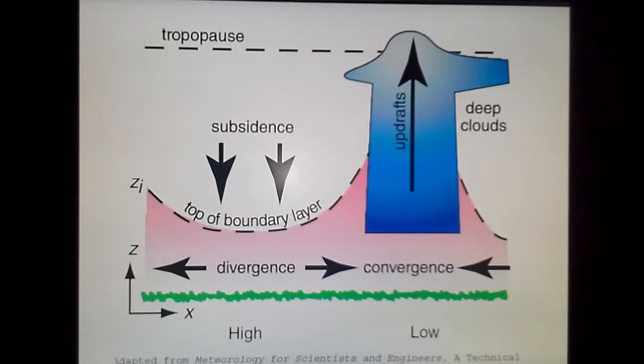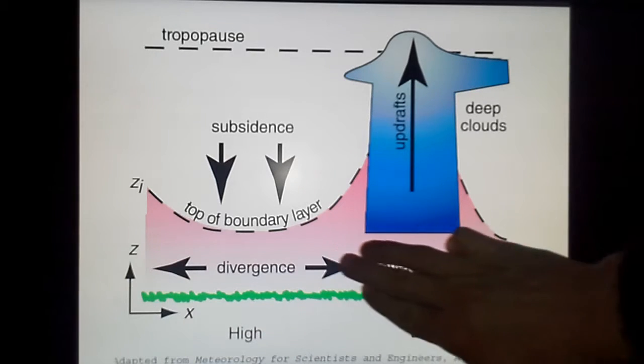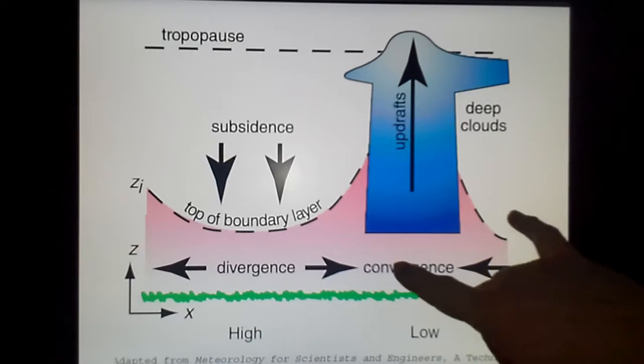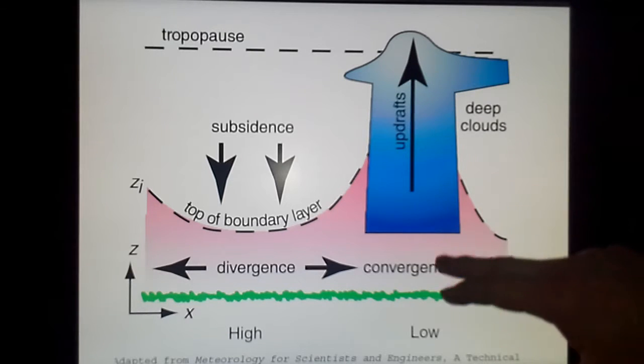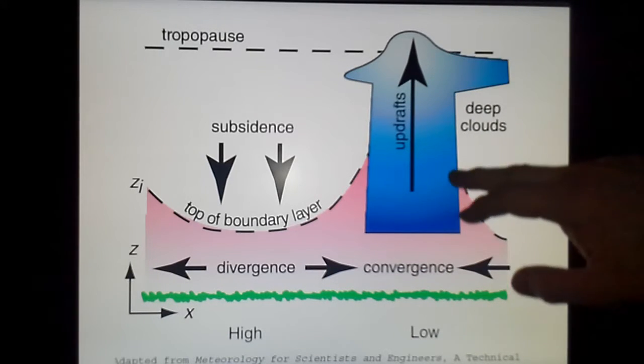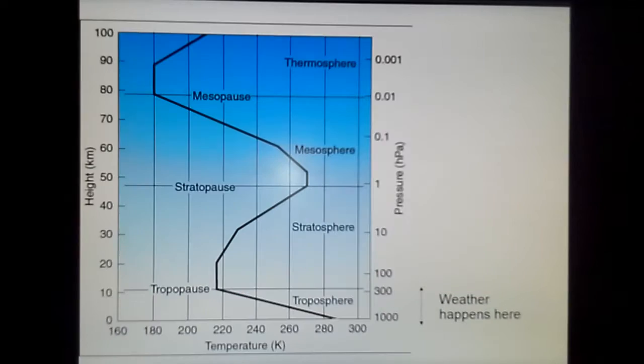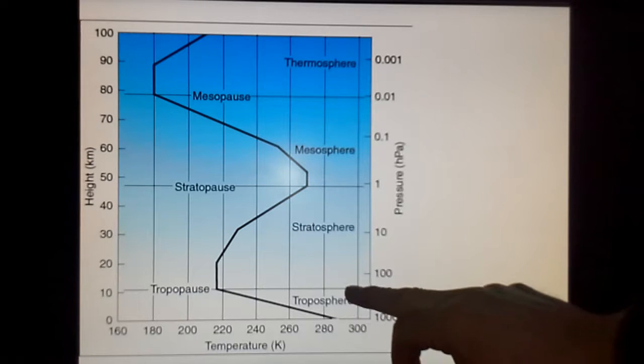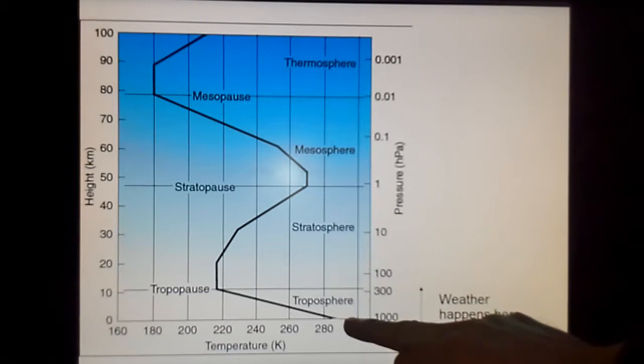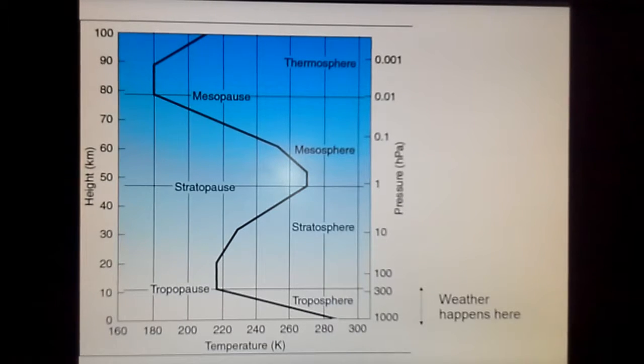Here we have another figure of the same thing. In the free atmosphere, we have very little effect of surface friction, and at the bottom we have the boundary layer. In case of strong convection, the boundary layer may reach all the way up to the tropopause. The troposphere is the lowest part of the atmosphere with by far the most of the mass, and it's in here that we have what we call weather.